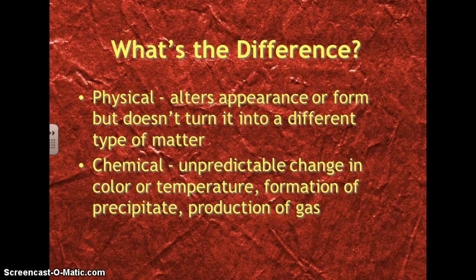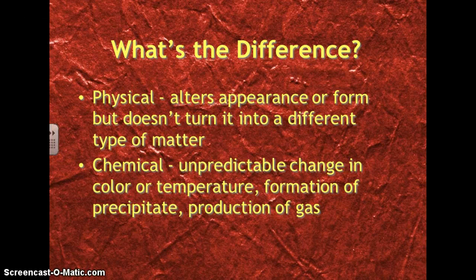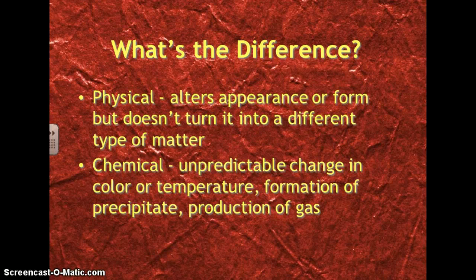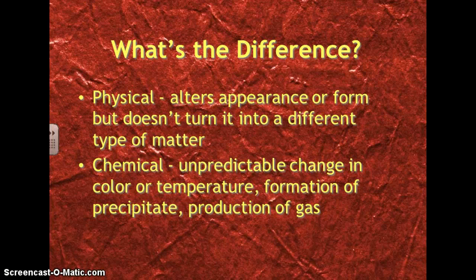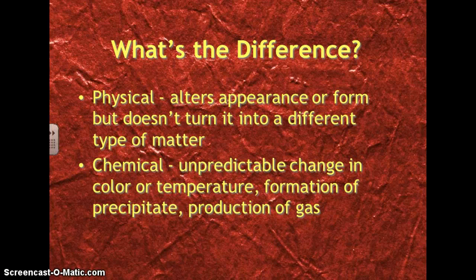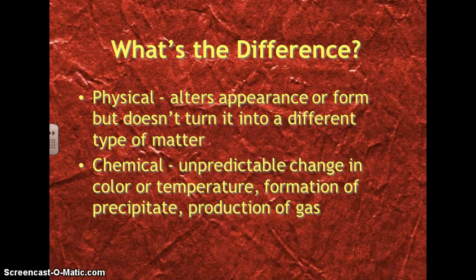The formation of a precipitate is another way that we can tell a chemical change has occurred. And a precipitate is another word for clumping or chunks. So, if we're mixing two liquids together and it starts to get chunky or clumpy, then that is a precipitate and a chemical change has taken place. Another way that we know a chemical change has occurred is with the production of a gas. And we know that a gas is being produced if we see bubbles forming in a liquid.